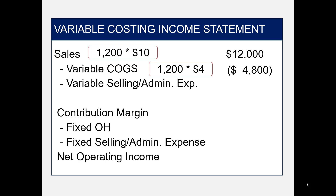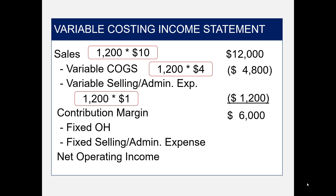Variable selling and administrative expenses are 1,200 units times $1, or $1,200. For fixed overhead and fixed selling and administrative — this is where this method gets very easy. You just identify how much was incurred: $600 for fixed overhead and $700 for fixed selling and administrative expense. That leaves net operating income of $4,700.